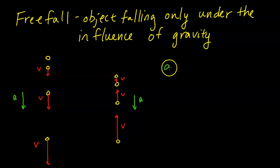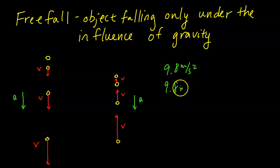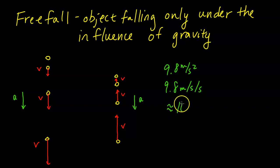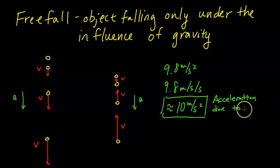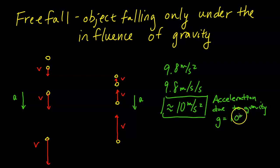When we experimentally measure this, we get a value of 9.8 meters per second squared, or 9.8 meters per second per second. We often round this to about 10 meters per second squared because it's an easier number to work with in calculations. This is referred to as the acceleration due to gravity, and we give it the symbol g. So g is approximately equal to 10 meters per second squared.